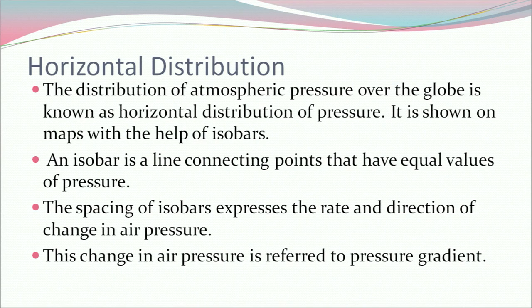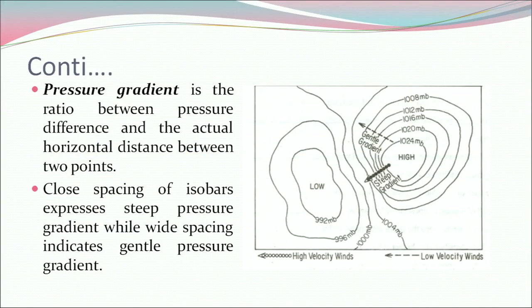Now let's understand the horizontal distribution. The distribution of atmospheric pressure over the globe is known as horizontal distribution of pressure. It is shown on maps with the help of isobars — a line connecting points that have equal values of pressure. The spacing of isobars expresses the rate and direction of change in air pressure, referred to as the pressure gradient. Pressure gradient is the ratio between pressure difference and the actual horizontal distance between two points.